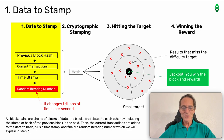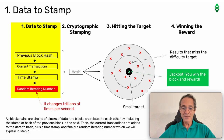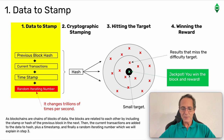Step one: data to stamp. As blockchains are chains of blocks of data, the blocks are related to each other by including the stamp or hash of the previous block in the next. Then the current transactions are added to the data to hash, plus a timestamp, and finally a random iterating number, which we will explain in step three.